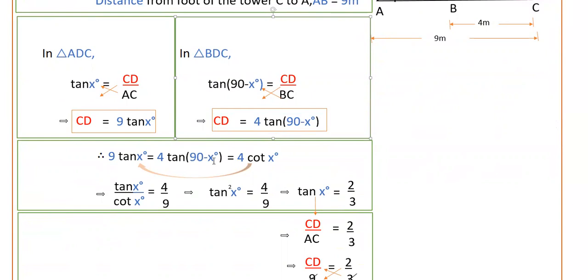We know that tan 90 minus x is cot x, so 4 into cot x degrees. So 9 into tan x is equal to 4 into cot x. So tan x by cot x is equal to 4 by 9.